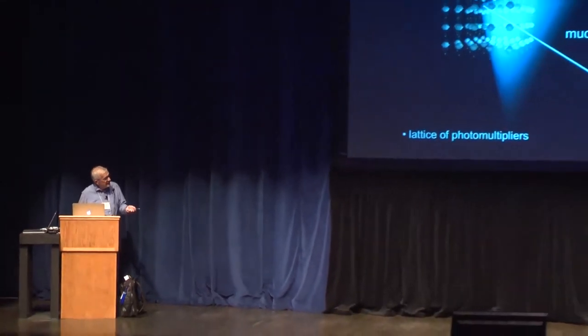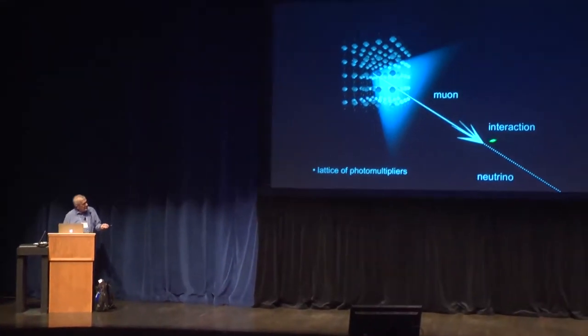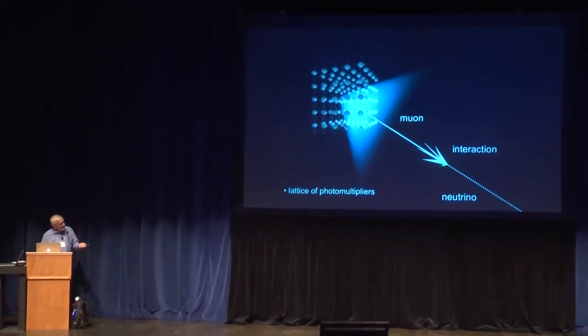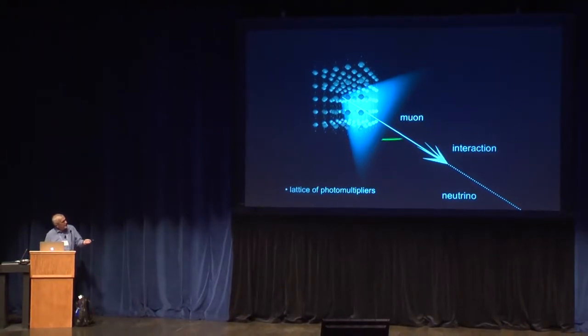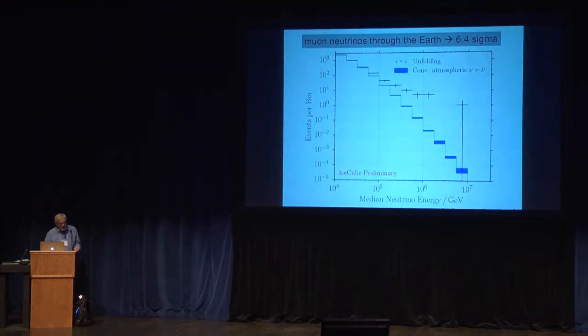And the only way that can happen is if a muon neutrino comes through the Earth and makes a muon under or inside your detector. So coming to cosmic neutrinos, this is what I just said. This is the cartoon. A neutrino comes to the Earth, interacts below the detector, makes a muon, and the muon goes through the detector. You map the Cherenkov cone with the array, and you know you detected a neutrino and you know its direction. And to make a long story short, after seven years, this is the result.